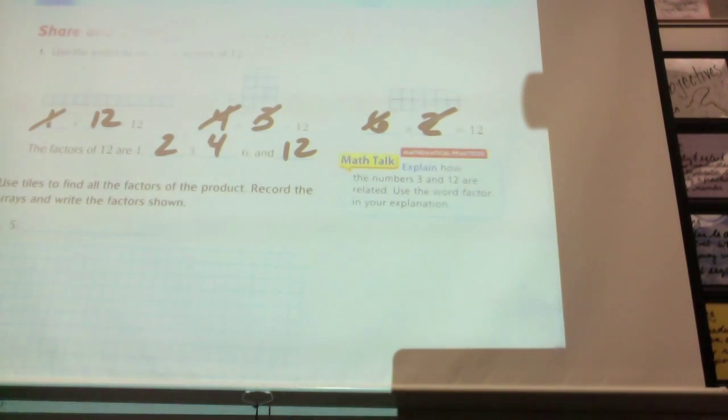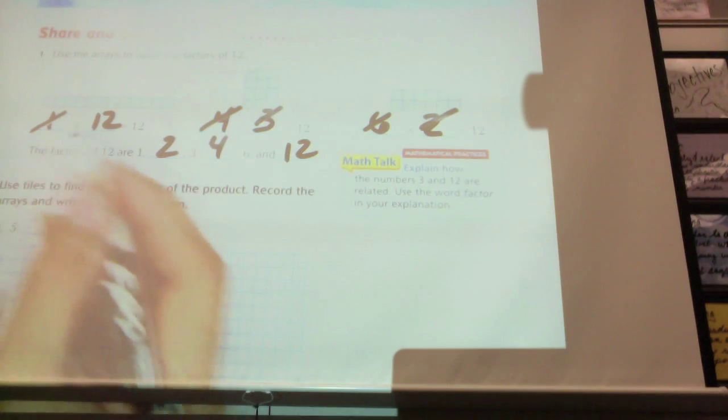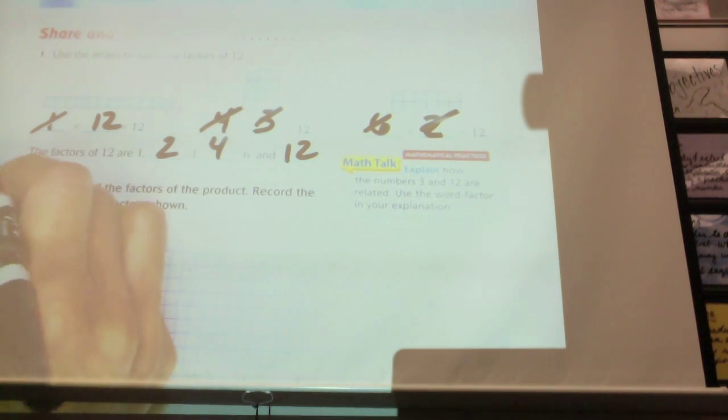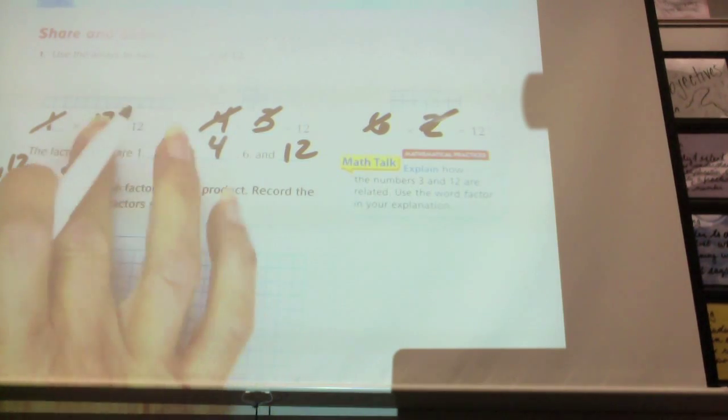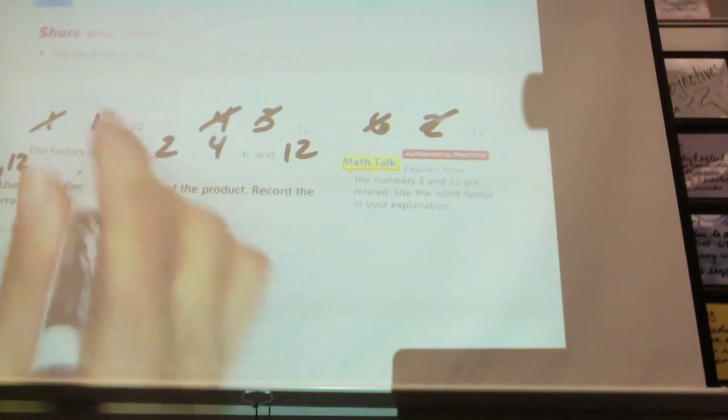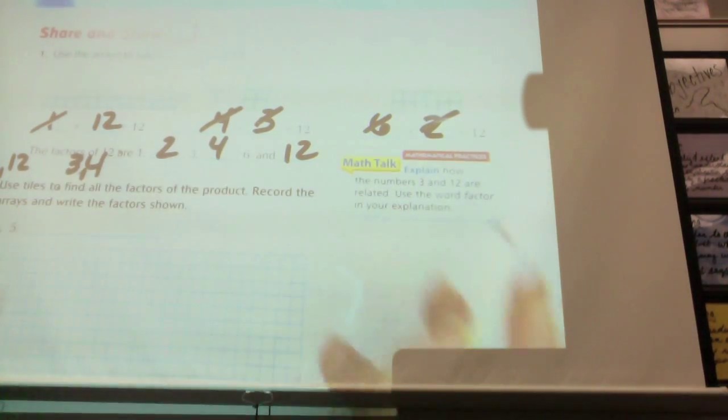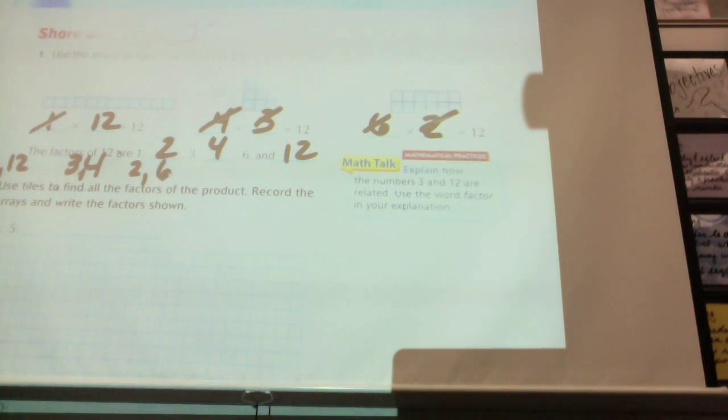We did skip a problem at the bottom of the other page. And all it was talking about was factor pairs. In this case, our factor pairs were 1 and 12, 4 and 3, or 3 and 4. And then, 2 and 6. Those are our factor pairs. We missed that on the other page. And that's all it is. What two numbers multiply together to equal 12? Which ones are factor pairs?